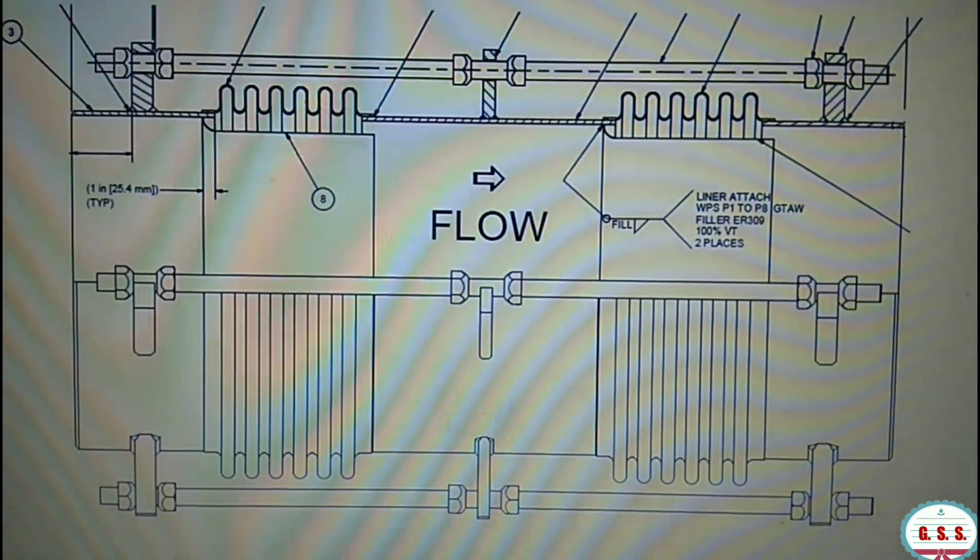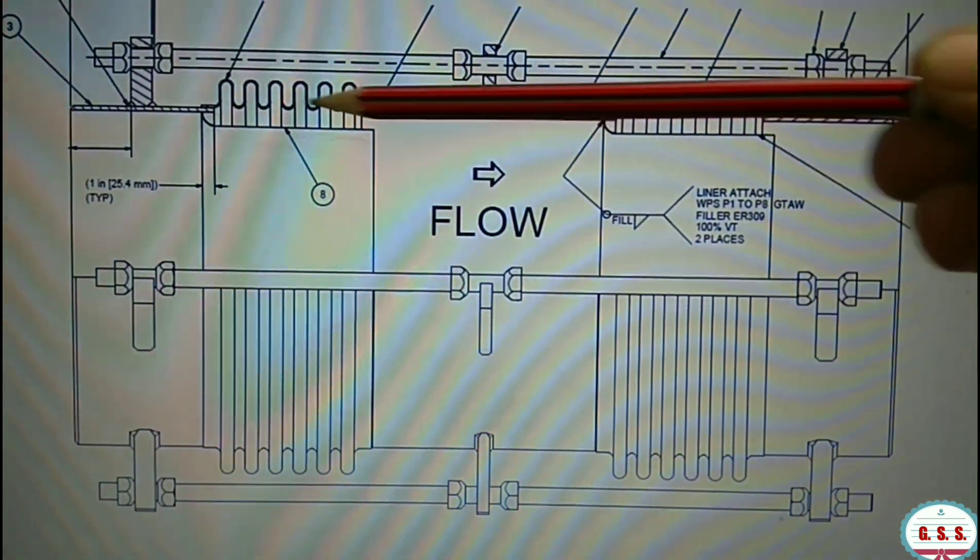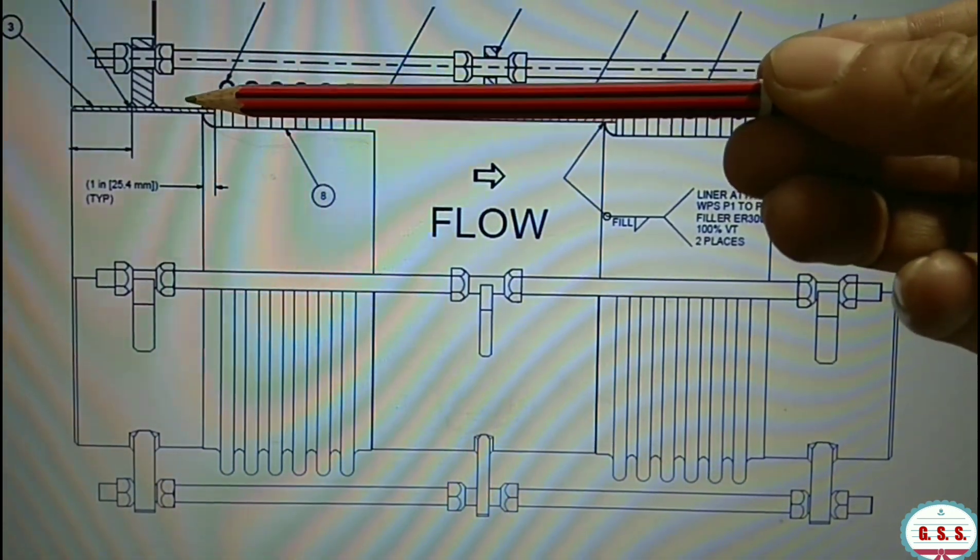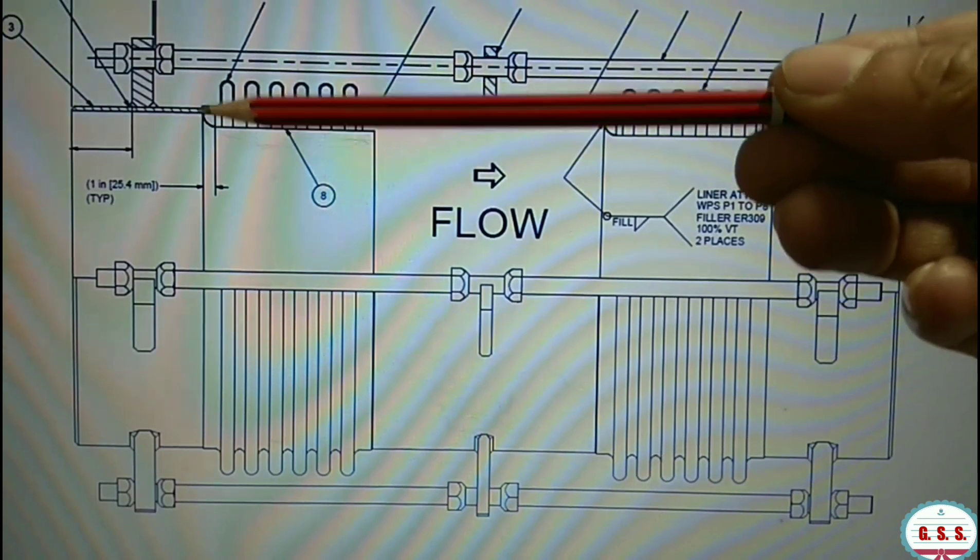If you see a bellows drawing, these are the bellows convolutions of thin stainless steel sheet and these convolutions are welded with the bellows body at this point.